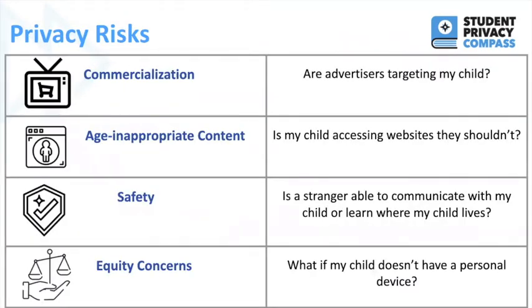Let's dive into some of the common privacy risks, which helps us understand why it's so important to protect student privacy. A common privacy concern is commercialization — are advertisers using information they've gathered to target my child? Age-inappropriate content: are children accessing websites that aren't appropriate for their age? Safety: is a stranger able to communicate with my child, learn where my child lives, or obtain other information? Another is equity concerns — if my child doesn't have a personal device and has to rely on a school-administered device, these school devices tend to be more monitored for safety concerns, such as sending alerts when students visit certain sites or search certain terms.